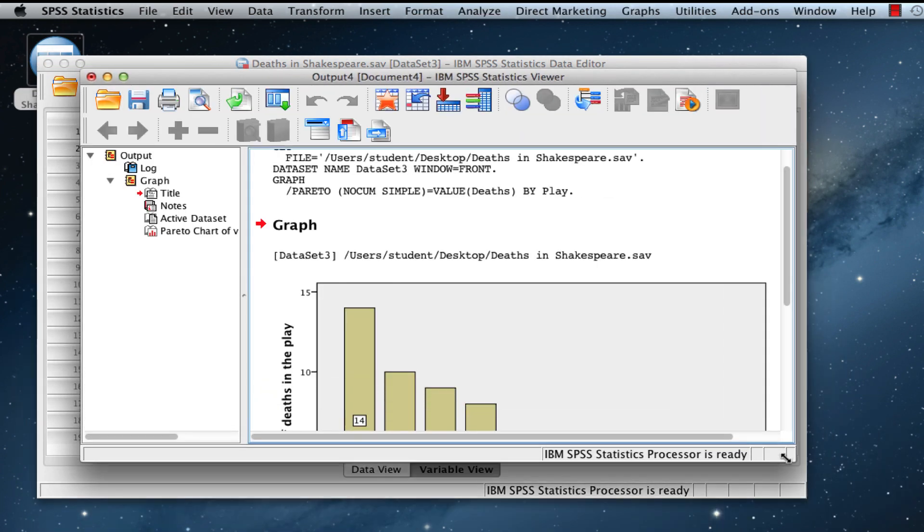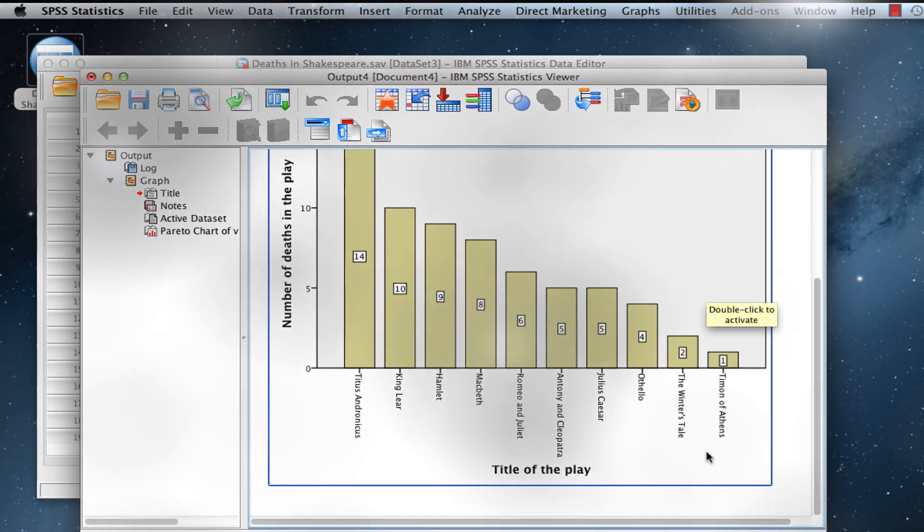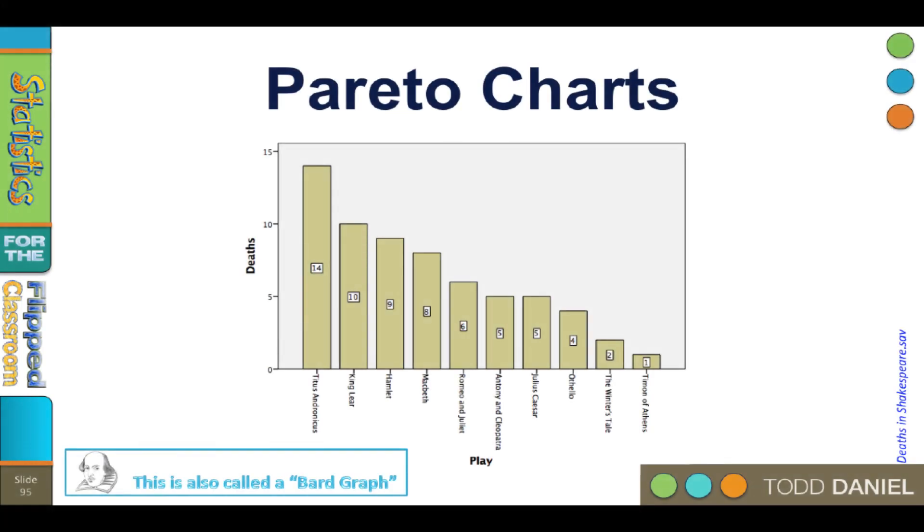and let's see what that Pareto chart looks like. Now we can see the number of deaths per play in descending order. The bloodiest Shakespearean play is Titus Andronicus, followed by King Lear, and then Hamlet. In each case, you can see the actual number of deaths in each play. A lot of people don't know this, but this is also called a barred graph.